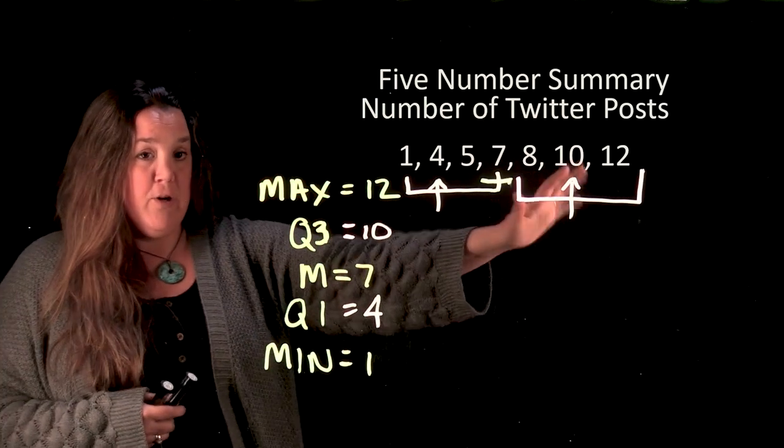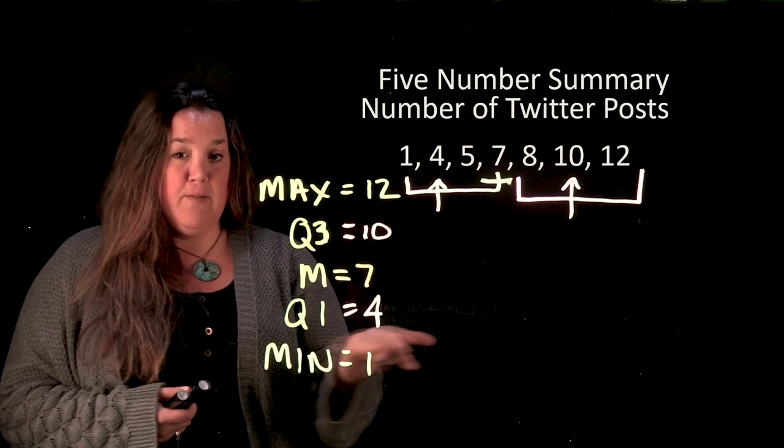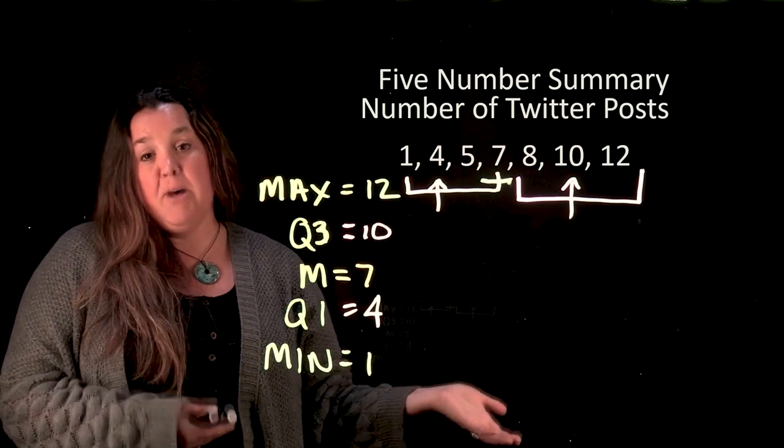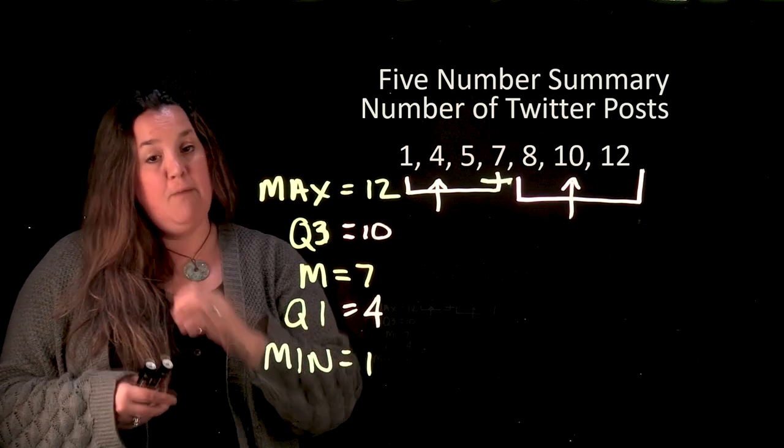You have all of your data in order you cut it down the middle to find the median and then Q3 is the median of the top half and Q1 is the median of the bottom half.